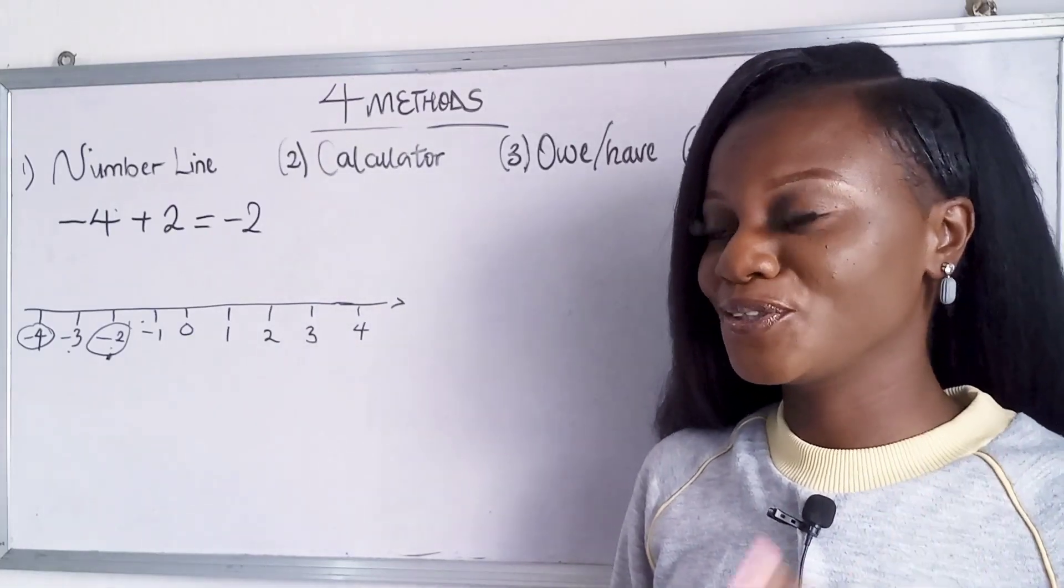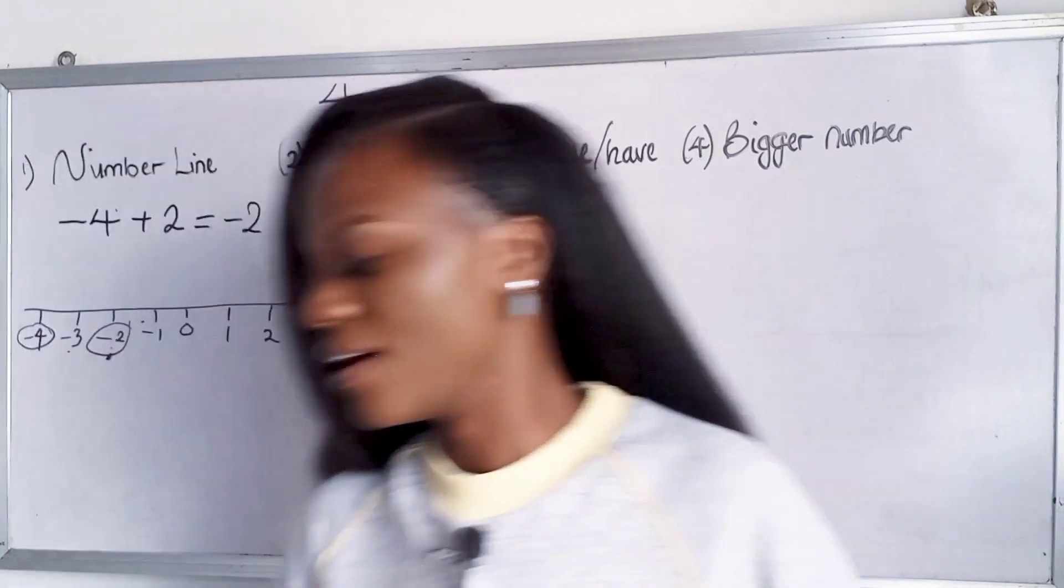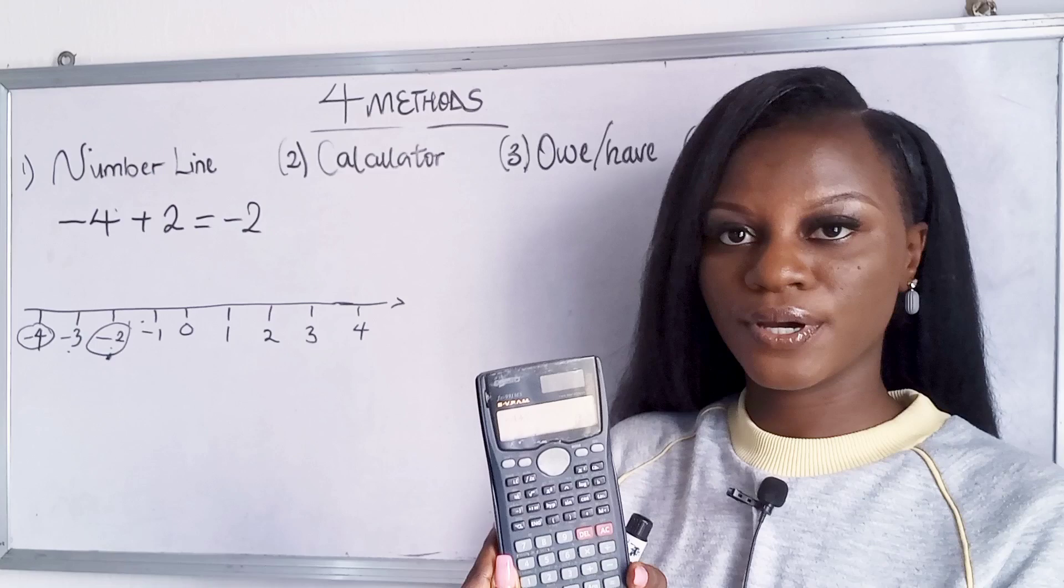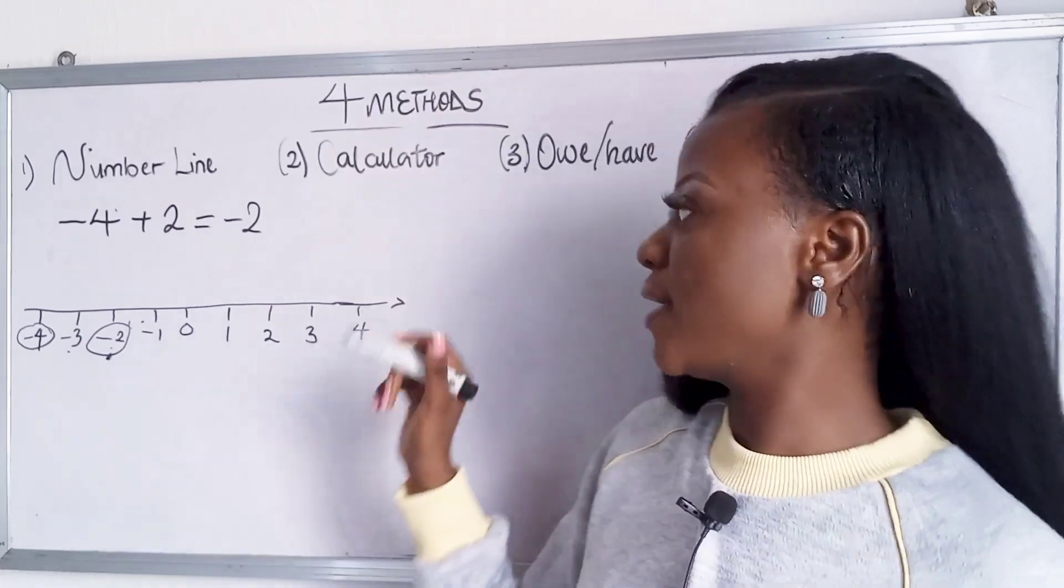Now for the second method which is the calculator, you can pick your calculator and then you put in minus four plus two on your calculator so we would get minus two as well.